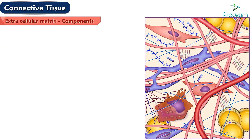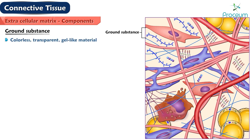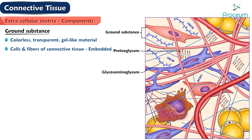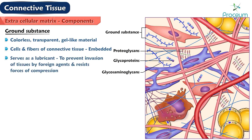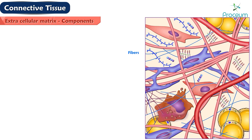Ground Substance is a colorless, transparent, gel-like material in which the cells and fibers of connective tissue are embedded. It is a complex mixture of glycosaminoglycans, proteoglycans, and glycoproteins. Ground substance serves as a lubricant, helps to prevent invasion of tissues by foreign agents, and resists forces of compression.